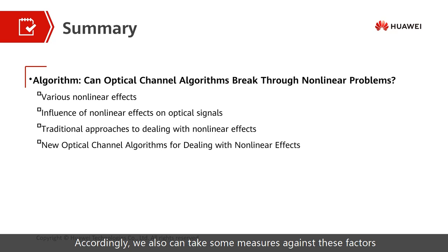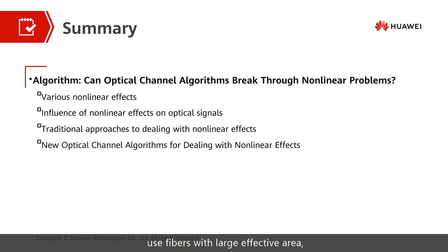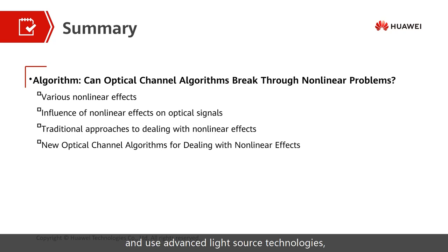Accordingly, we can take some measures against these factors to avoid non-linear effects — for example, reducing the incident optical power, using fibers with large effective area, managing dispersion, and using advanced light source technologies.